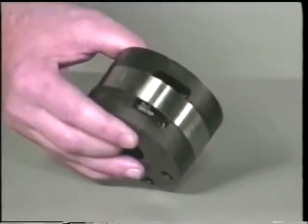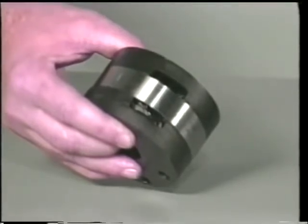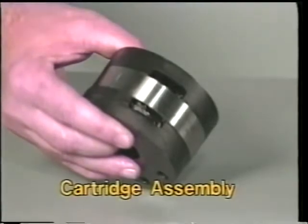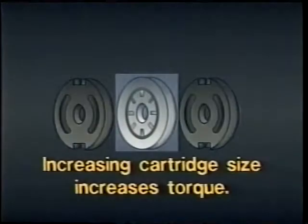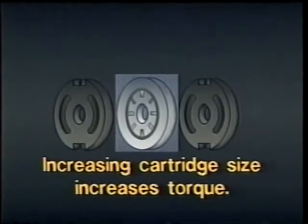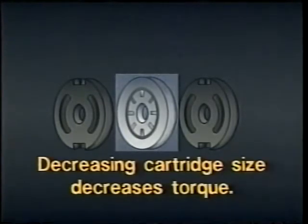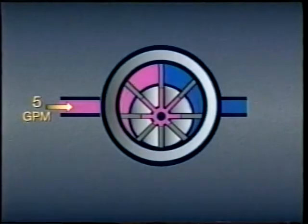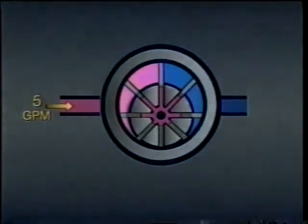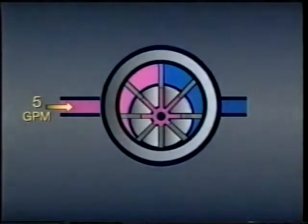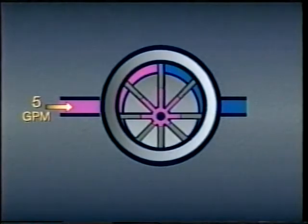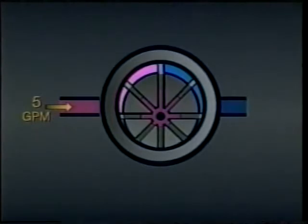The size of a motor means its displacement, or how much fluid it can hold. In a vane type motor, changing the displacement can only be done by changing the cartridge assembly, which is the rotating group and the cam ring sandwiched between the port plates. Increasing the size of the cartridge assembly without changing the pressure will increase the torque, because the vanes of the larger cartridge assembly have more area exposed to pressure. Decreasing the size without changing the pressure will decrease the torque. Increasing the displacement without changing the flow rate will slow the motor down, because the same amount of fluid only has to fill a smaller space inside the motor.